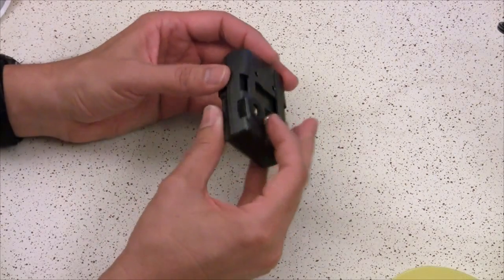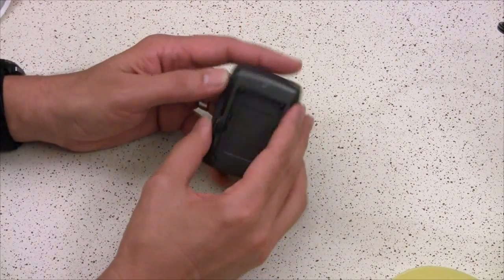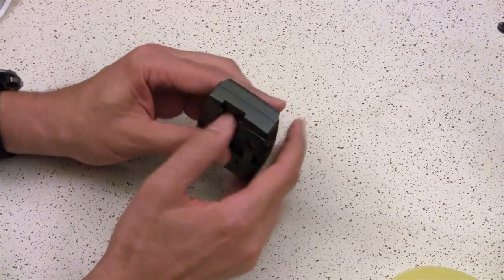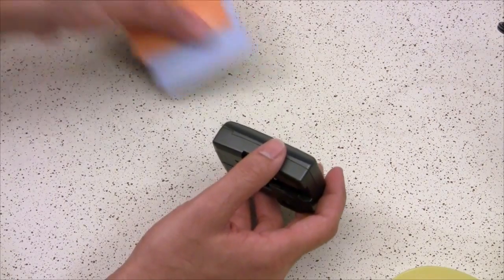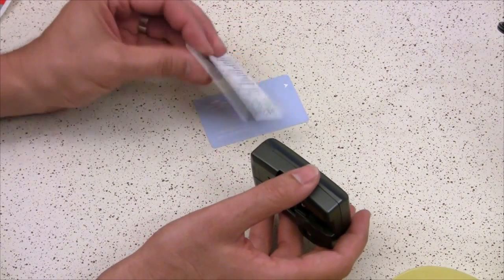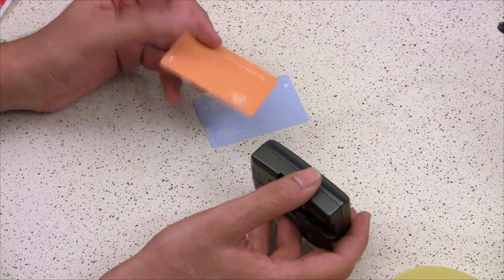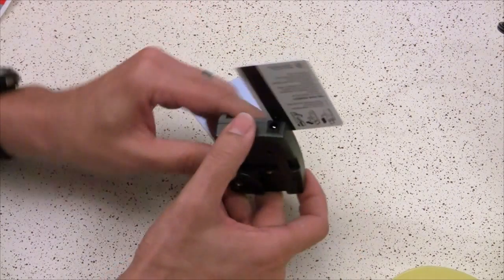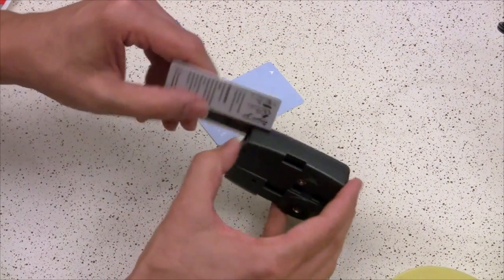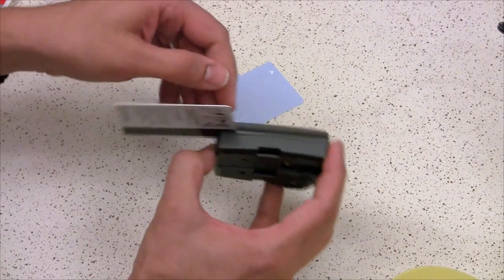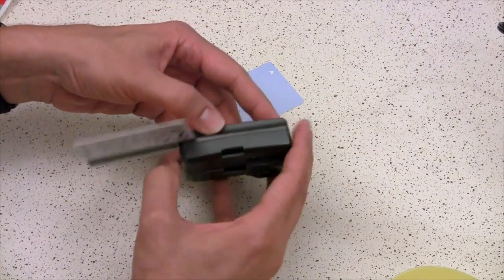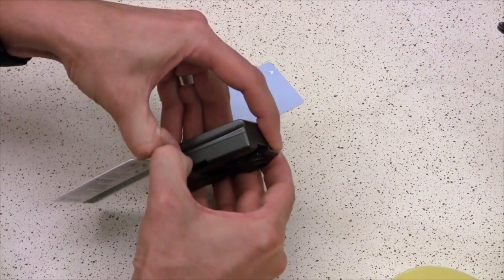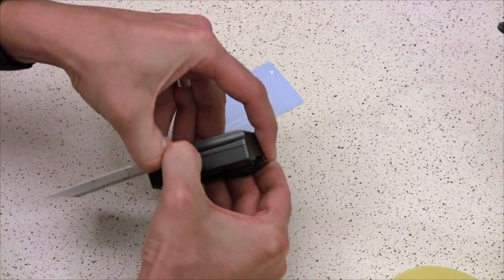Now comes the fun part to try and get the case apart. It's actually snapped together once the screws are out, but getting it separate can be a challenge. So we're going to use these cards, card keys from a hotel. You can use an old credit card or debit card. Right by the power connector, I'm pulling it apart with my fingernails and inserting one of the cards to help keep it apart. You're going to have to get your fingernails in there, separate it, and then jam the card in.